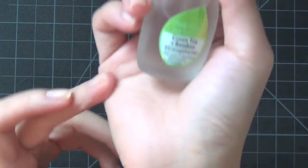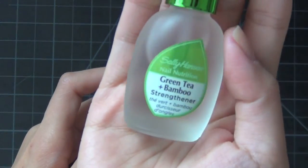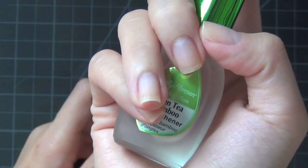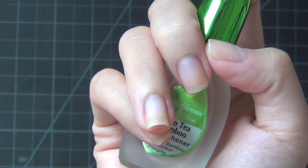So usually the next thing that I do is to paint on one layer of the nail strengthener. This one has green tea and bamboo in it. It makes my nails feel a lot more protected.